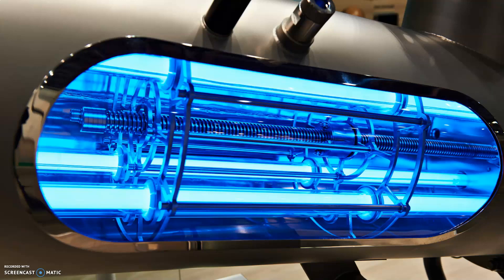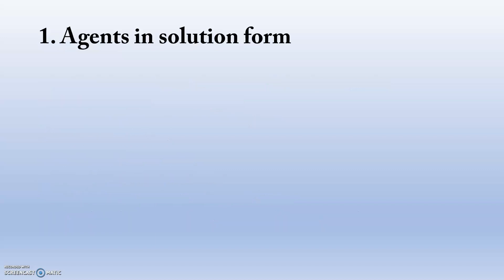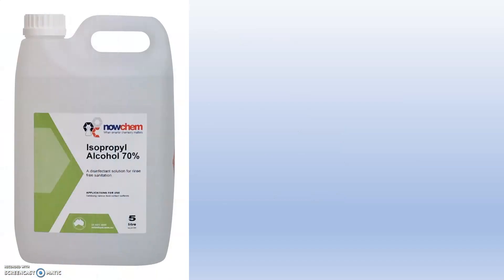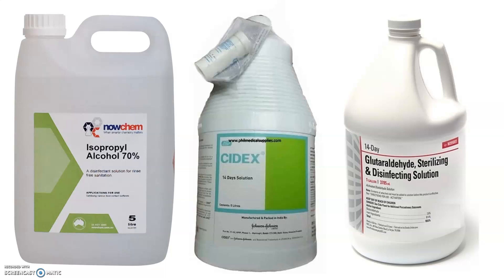UV radiations will kill almost all pathogenic organisms and microbes. Moving to chemical sterilization — an ideal chemical agent should kill all pathogenic microorganisms, work effectively in a short period of time, not corrode, dry, or stain, be stable, odorless, and non-toxic, be effective in the presence of organic matter, and not be inactivated by other concurrently used chemicals. Mainly, agents in solution form are used, such as alcohol and aldehyde. Ethyl alcohol and isopropyl alcohol are very common; the presence of water easily denatures protein, and isopropyl alcohol is more bactericidal than ethyl alcohol. Aldehydes include formaldehyde and glutaraldehyde, with common names CIDEX and Parvocide. Isopropyl alcohol 70% is the disinfectant used in hospitals and for pre-sanitation. CIDEX solution and glutaraldehyde sterilizing and disinfectant solution are also shown.